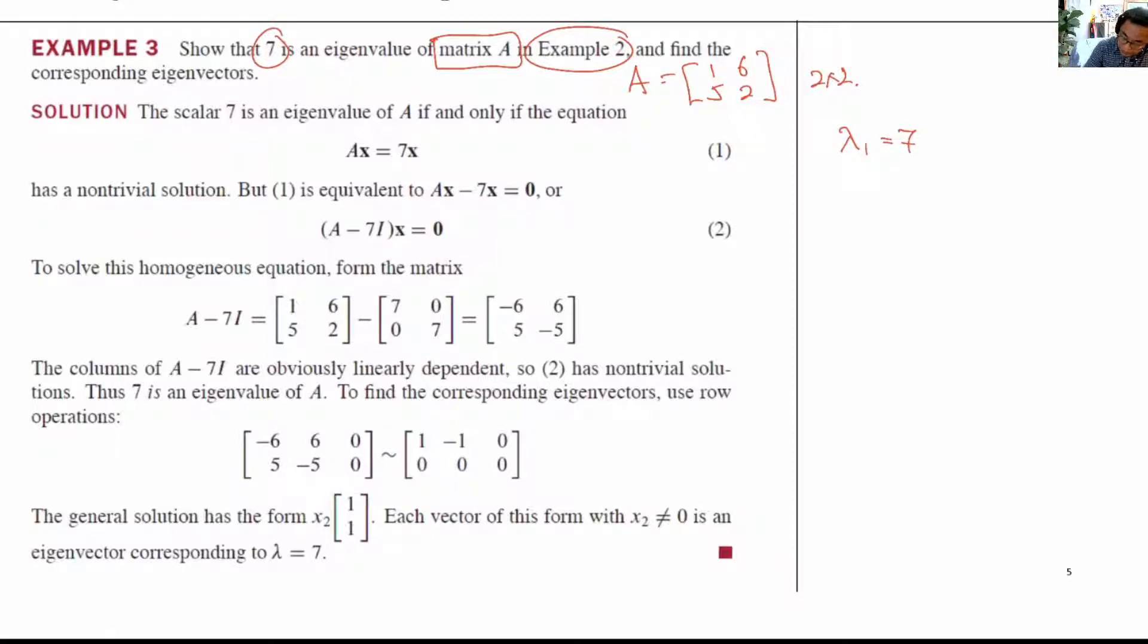Show that this is a real eigenvalue by doing this: Ax equals λ₁ times x. Lambda 1 is 7x. Show that this is true. And when this is true, then find x.